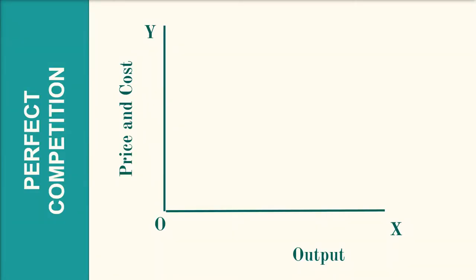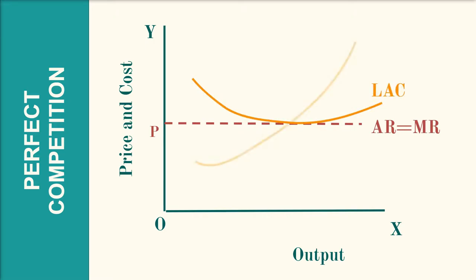Under perfect competition, the demand curve AR is tangential to the long run average cost curve (LAC) at its minimum point. There is full equilibrium where LMC equals MR, and AR — that is, price — equals the minimum LAC. This means that in the long run, with the entry of new firms, existing firms produce at the point of the lowest average total costs, earning no abnormal profit and no loss.